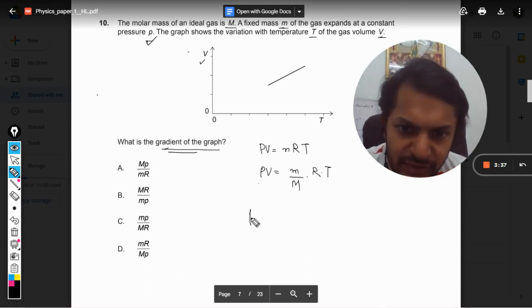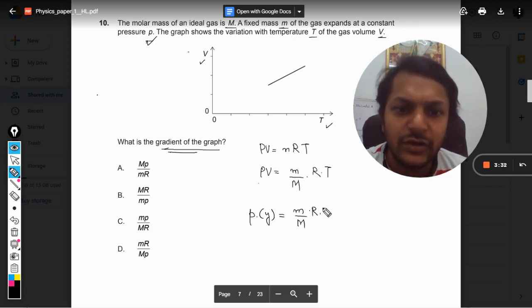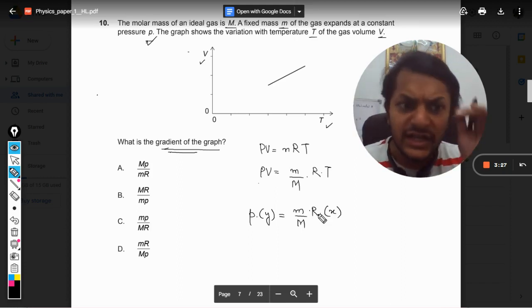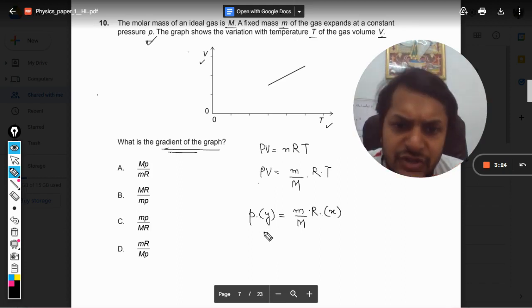So it will be P into Y equals small m by capital M into R, and T is on the X axis, so I am substituting X in place of T just for the clarification.